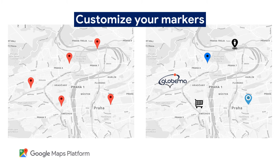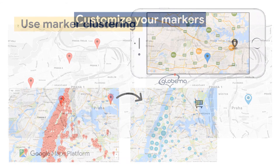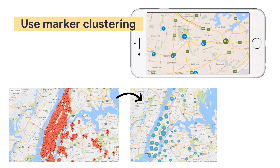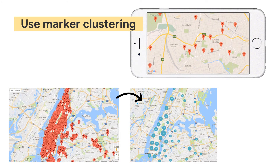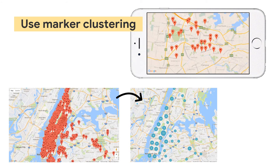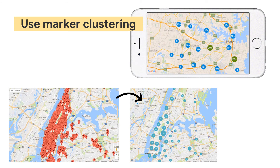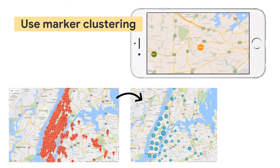Additionally, you can animate the markers and let them jump into your map. In case you have plenty of stores in one store locator, do not forget to use marker clustering — your map will be easier to read for your customers.